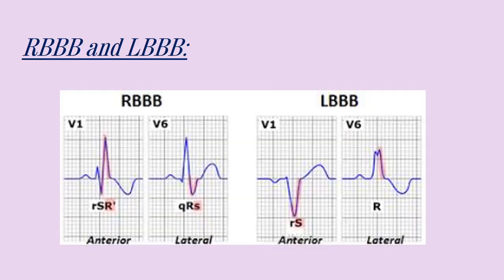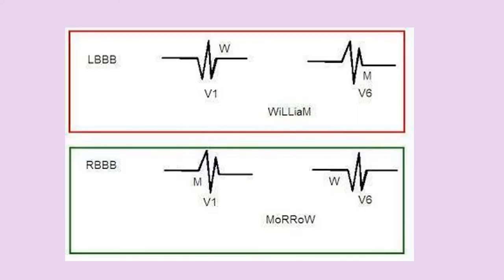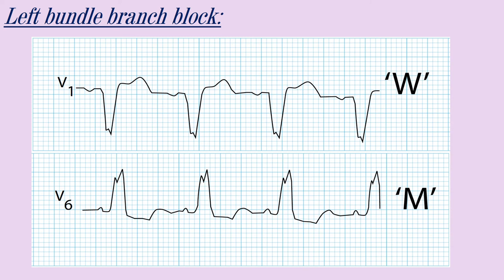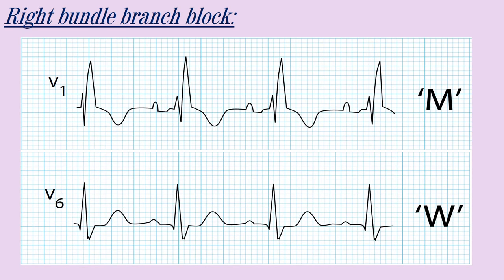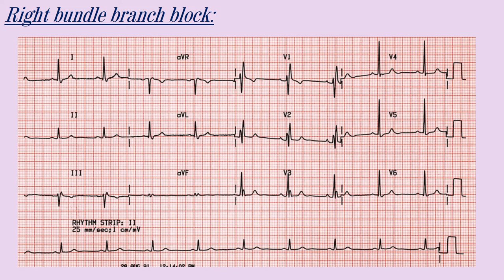Right bundle branch block and left bundle branch block occur when the impulse is delayed within the ventricular wall. Both are characterized by W-shaped and M-shaped QRS complexes — the M-shape is more prominent in both cases. In left bundle branch block, the M-shaped QRS is found in V6. In right bundle branch block, it is found in V1. We can see the M-shape clearly in V1 for right bundle branch block.